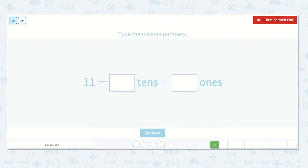Now we have 11. I see that we have a one in our tens place and a one in our ones place. That means we have one ten plus one one.